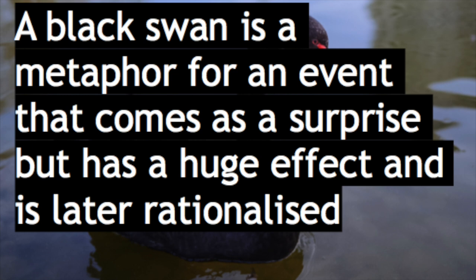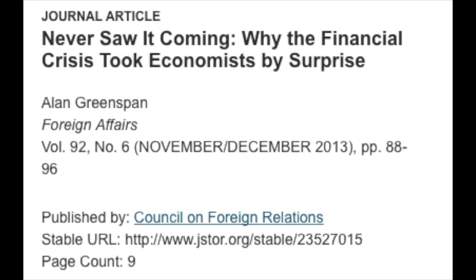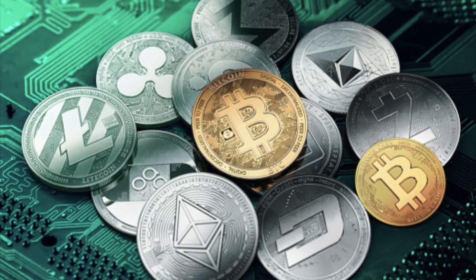A black swan is a metaphor for an event that comes as a surprise, has a huge effect, and is later rationalized. For example, the 2008 housing crisis was such an event — now it is clear why and how it happened, but only a few saw it coming in 2007. A positive black swan would be a surprise event with a huge positive effect. Cryptocurrencies in 2007 weren't even invented, yet look at their impact now — that is a positive black swan.